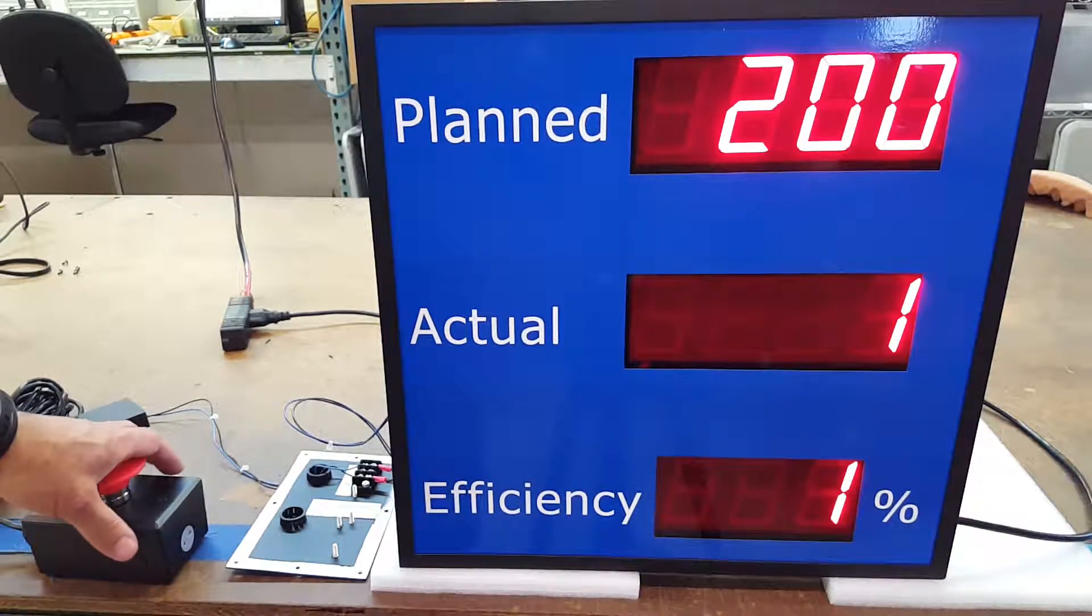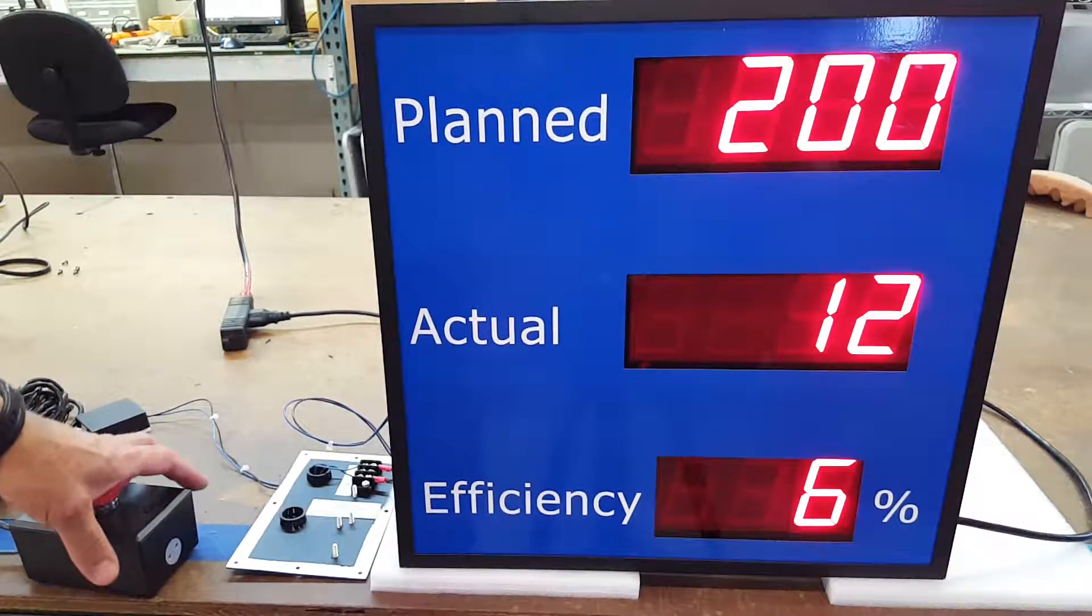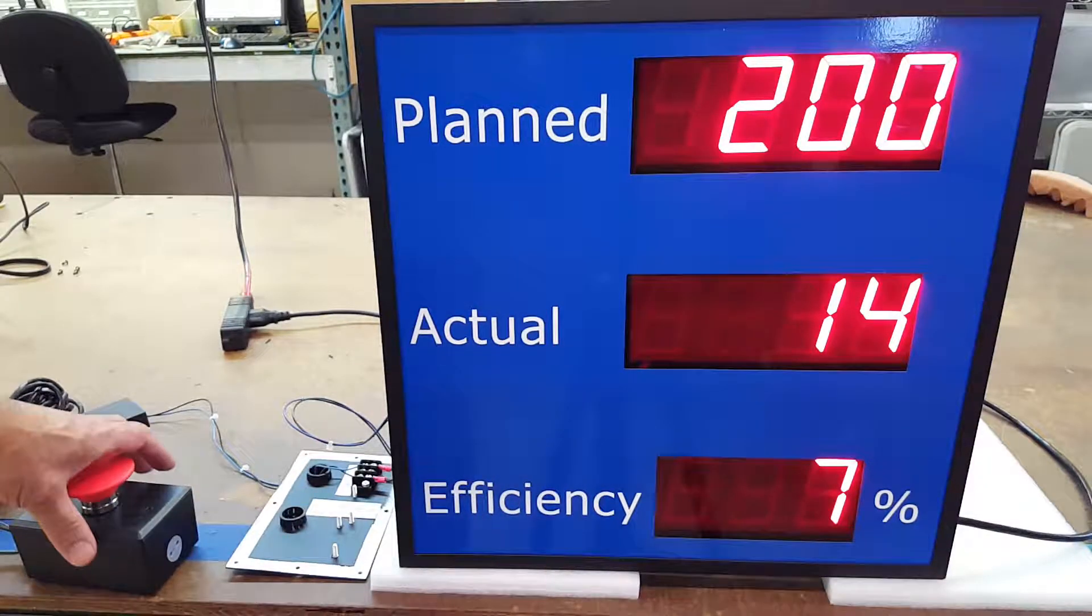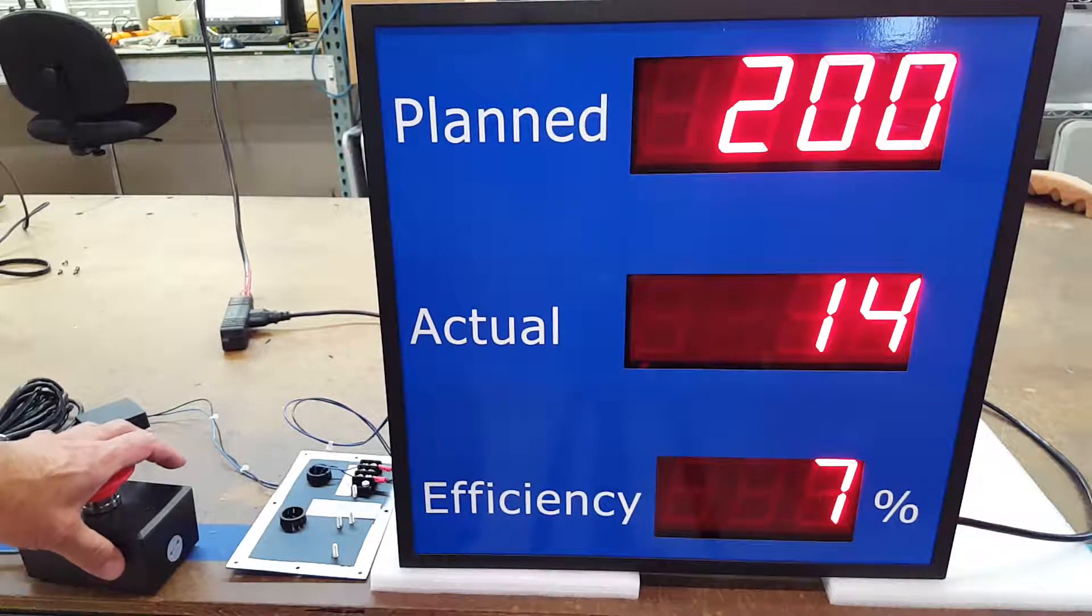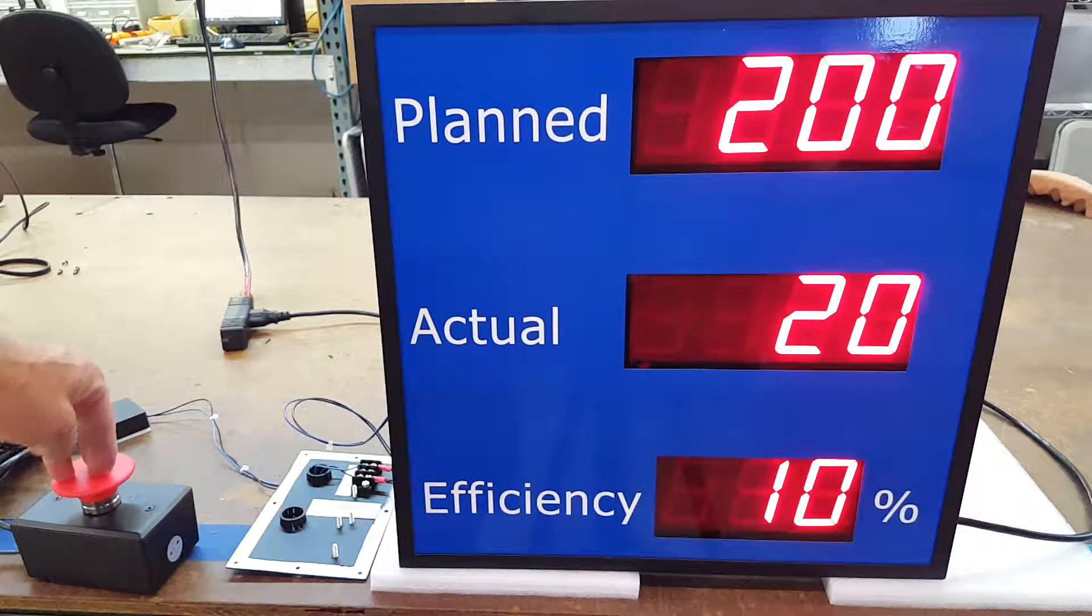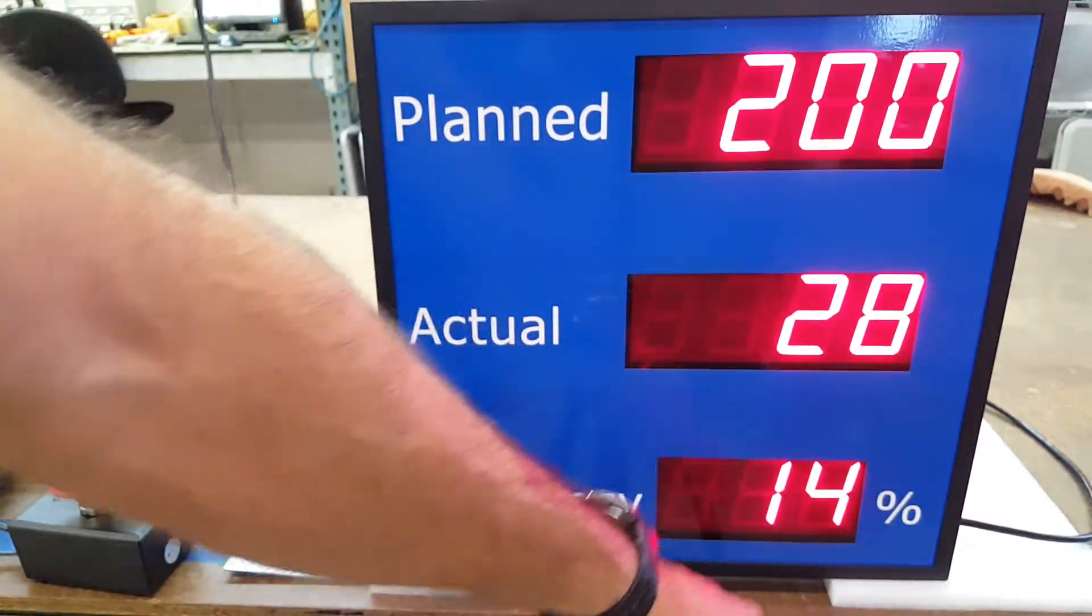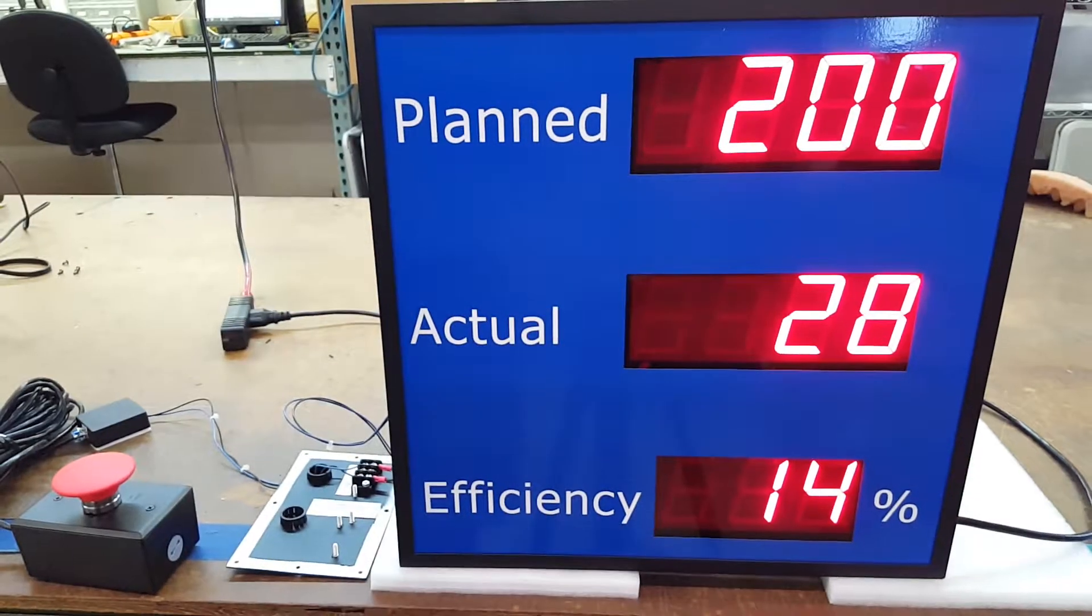Basically one press will increment the actual up by one. It is increment only. Following that, you'll get the percentage compared to the plan and actual.